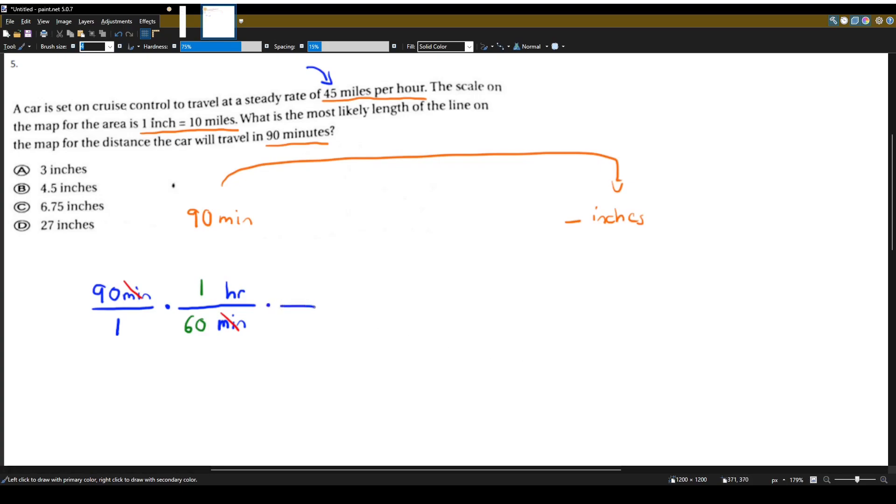So what's next? Now we can use this fact. That the car is set on cruise control to travel at a steady rate of 45 miles per hour. So now let's get rid of our hours and change it into miles. So 1 hour is 45 miles because the car travels 45 miles per hour. And now I can cancel out these units. Hour here and hour here.